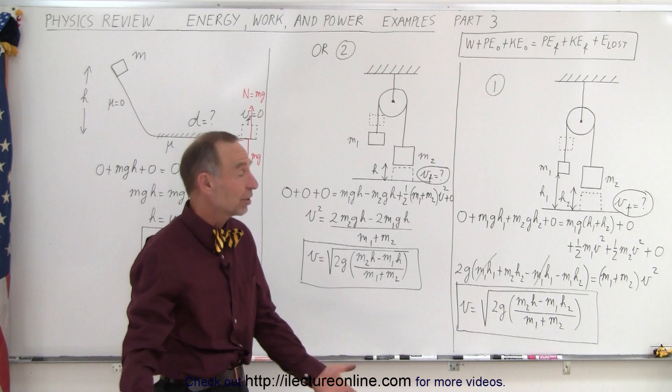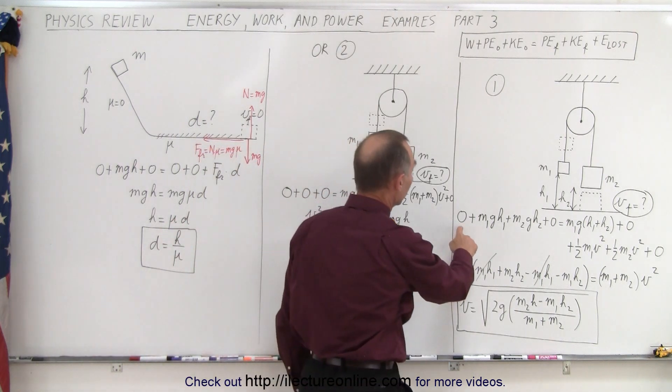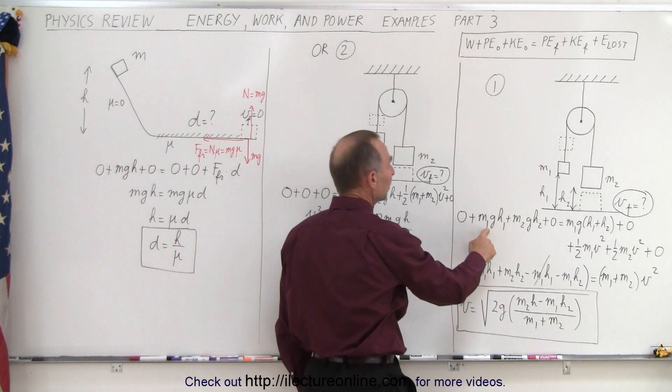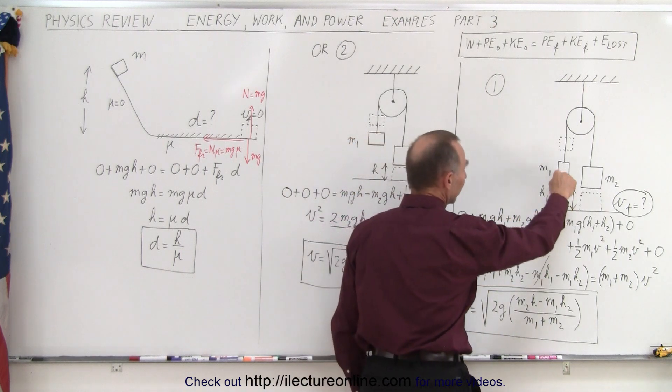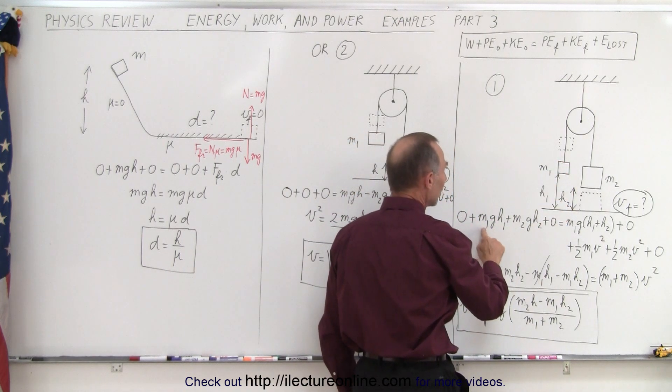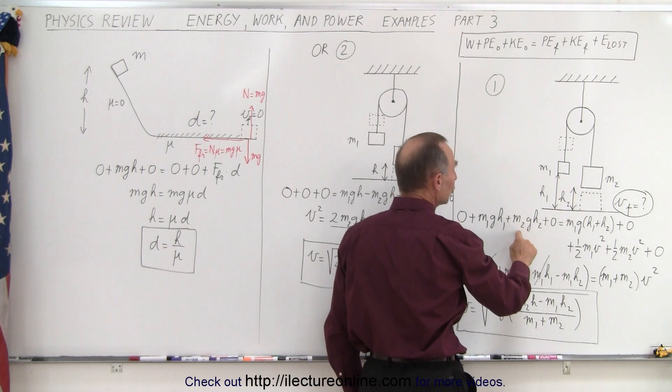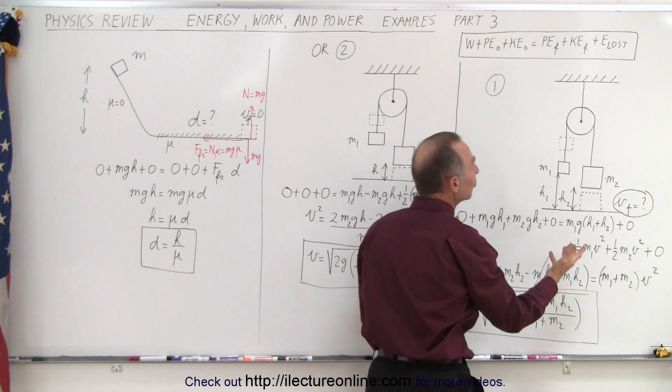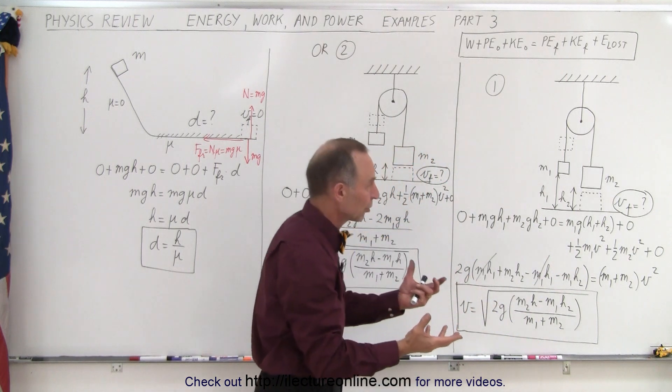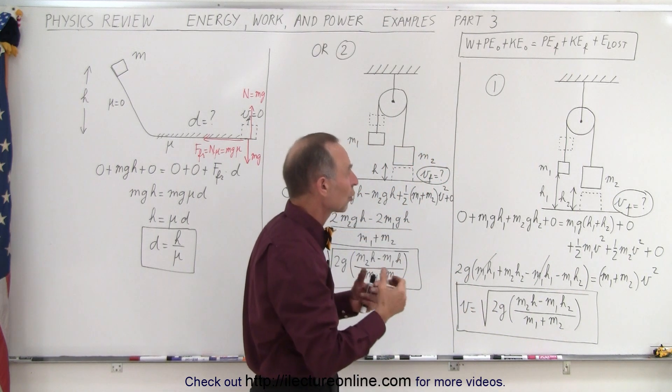So what does the equation look like? Well, we have no work put into the system. Our initial potential energy, well there's two blocks. The first block is at height h1 so it's m2gh2, and they're not moving initially, we're letting them go when they're sitting still, so there's no kinetic energy.